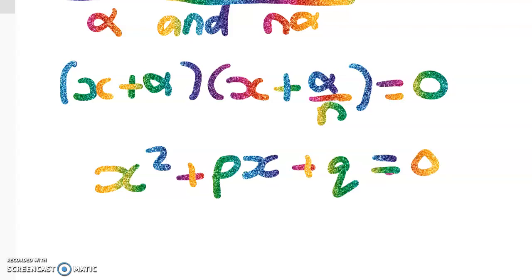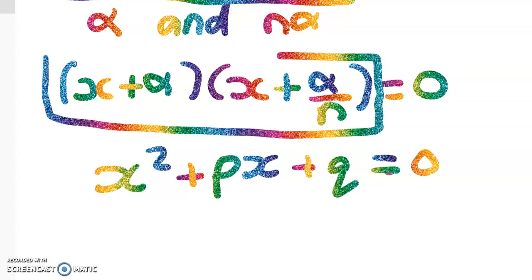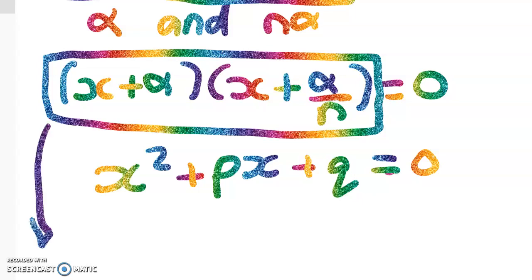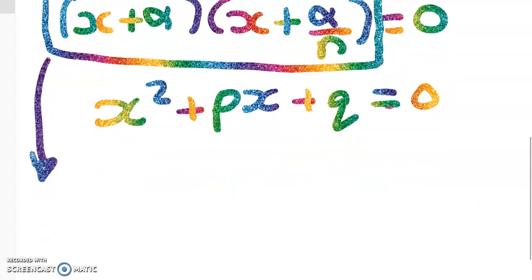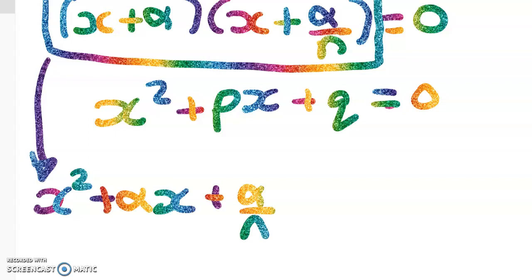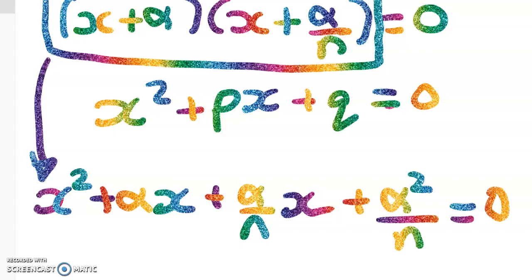So what I'm going to do now is to expand this out, and then collect up all the stuff, and I'm going to match up my coefficients. So the first step here is to expand. So when I expand, I get x squared plus alpha x plus alpha over nx plus alpha squared over n, and that equals zero.